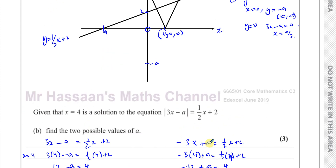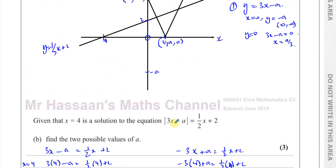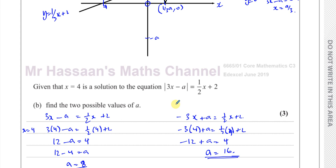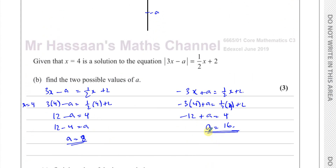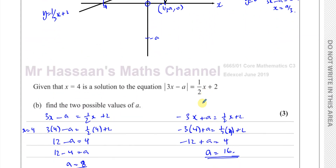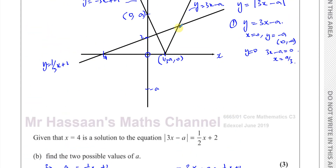So when a = 8, the graph is y = |3x − 8|, and one of the intersection points with y = ½x + 2 is x = 4. When a = 16, the graph is y = |3x − 16|, and one of the intersection points is also x = 4 — but on the other side of the V-shape.